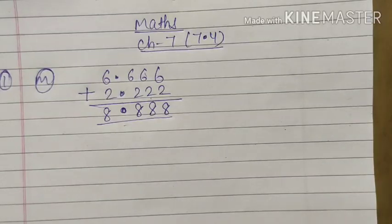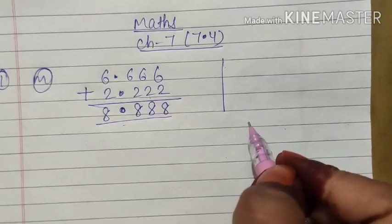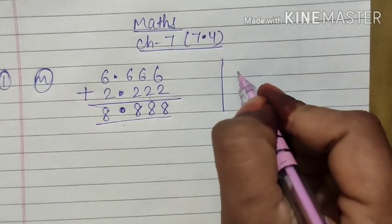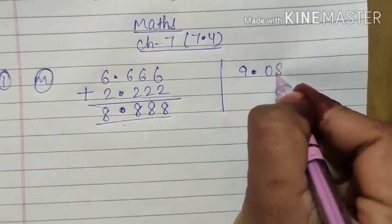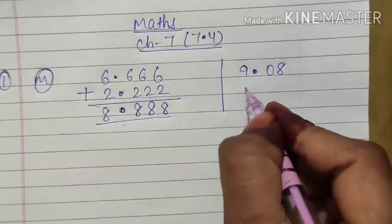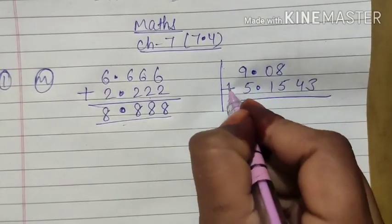If you have any two decimals and in one you have more number of decimals, in another you have less number of decimals, then you can put zero also. Here I am explaining one such question, since it's not given in your book so you may not need it. Suppose you have one number 9.08 and one number you have 5.1543.